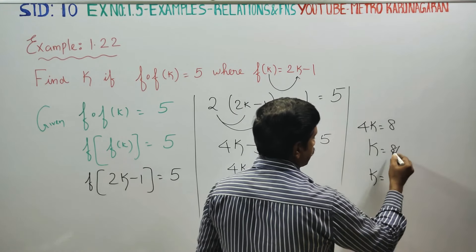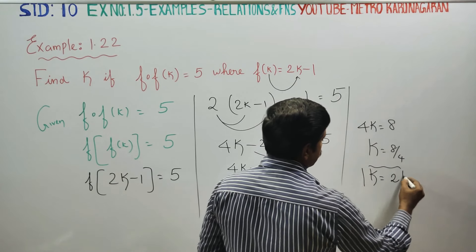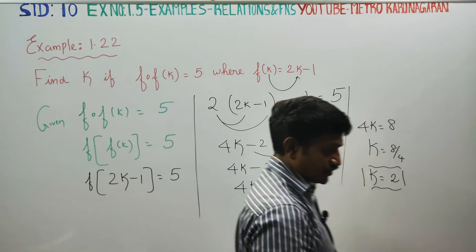k is equal to 8 divided by 4. Your answer will be 2. This is your final answer, k is equal to 2.